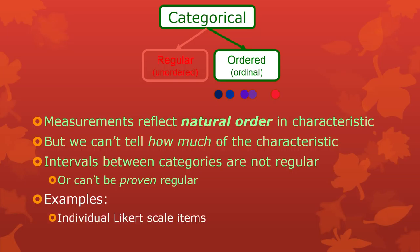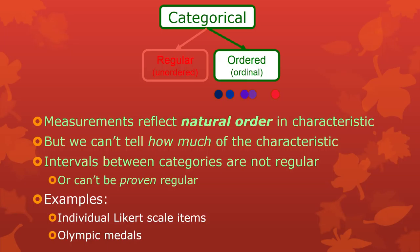Some examples: in psychology the big one is Likert scales. If you have a Likert scale item — a question that says how much do you agree with this, with options like very strongly disagree, strongly disagree, disagree, agree, strongly agree, very strongly agree — the difference between very strongly agree and agree looks like one point, but is that really the same size as the difference between agree and strongly agree, or disagree and strongly disagree? There's no way to prove that it is. Olympic medals — gold, silver, bronze: obviously gold is higher in esteem than silver and silver higher than bronze, but that doesn't imply anything about the difference between gold and silver or silver and bronze. They're pure order.